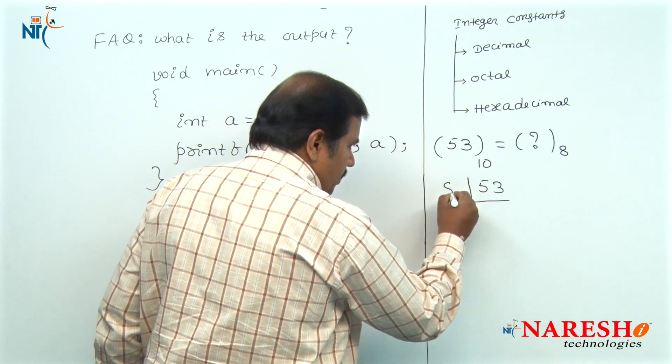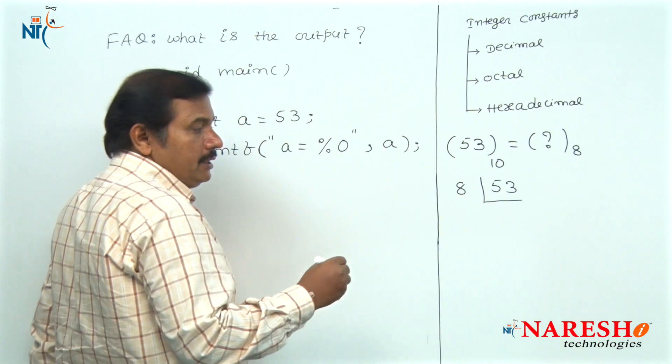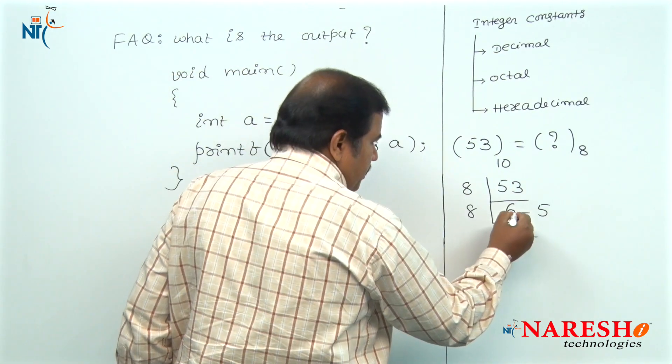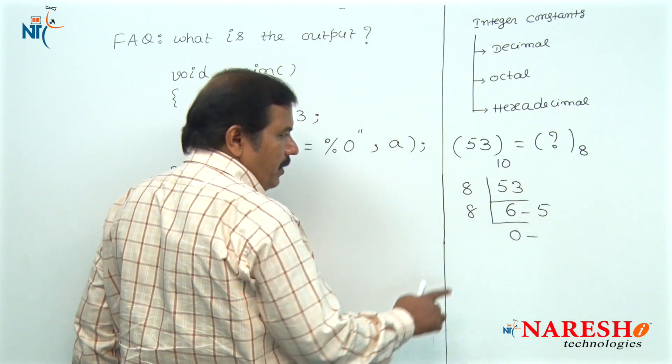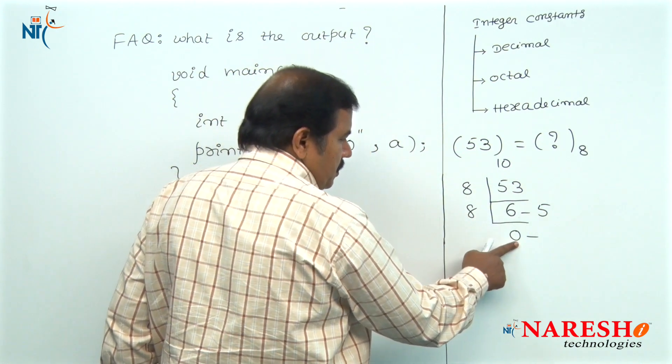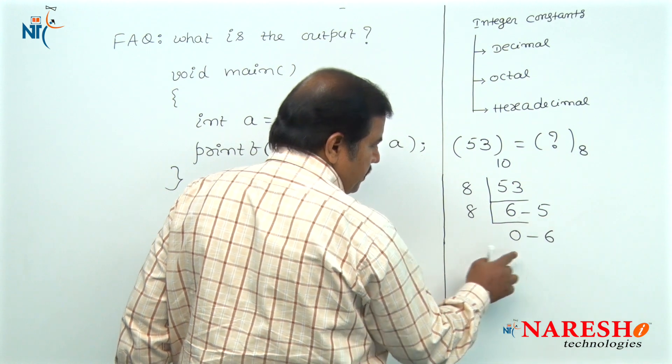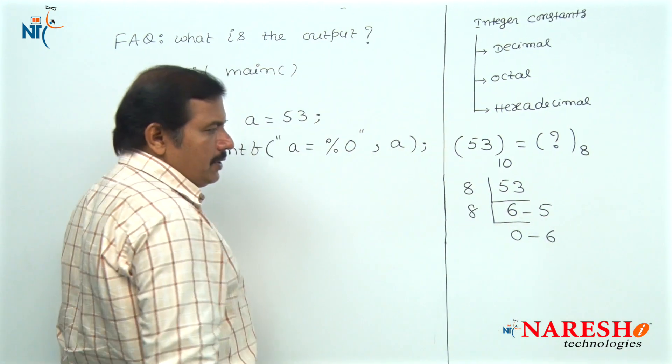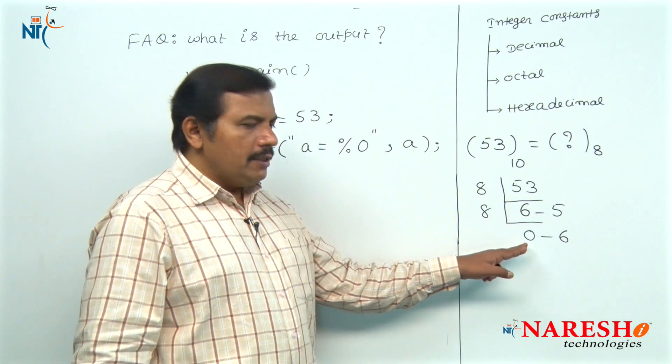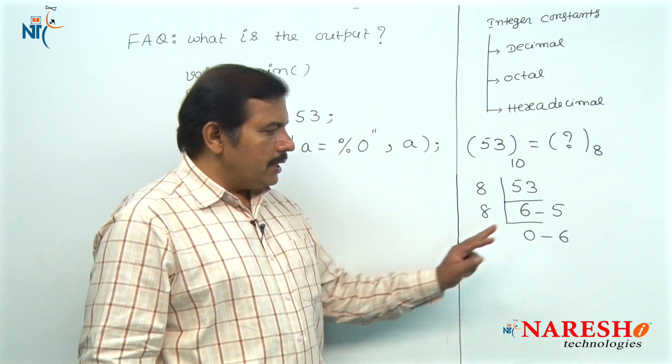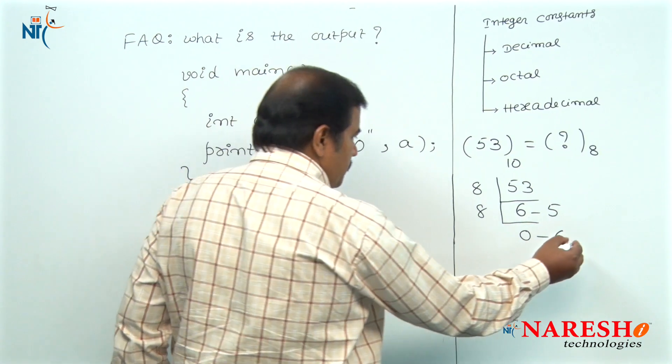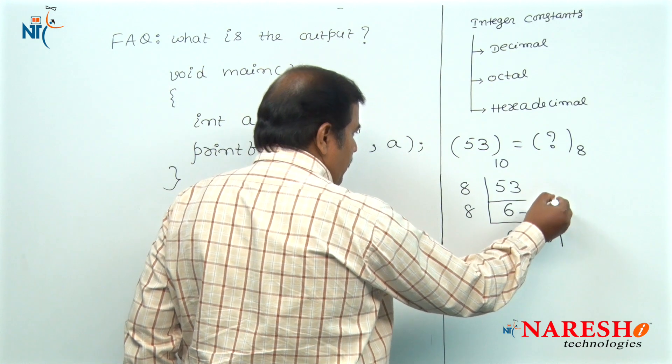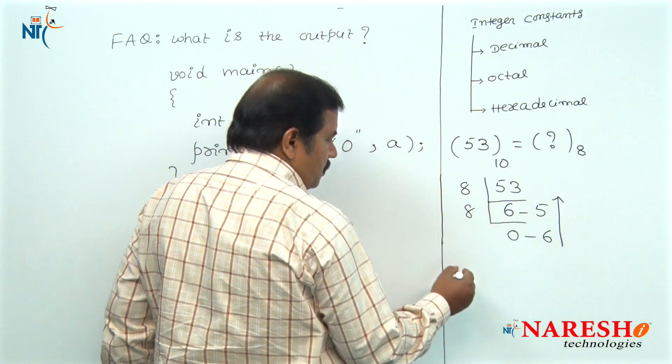Divide the decimal integer constant 53 with 8, 8 goes into 53 six times or 48 remainder is 5, 8 goes into 6 zero times remainder is 6. Continue this division until you will get quotient 0 and list out all these remainders from bottom to top.